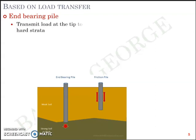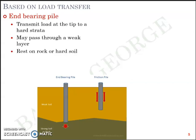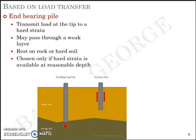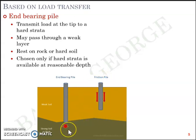End-bearing piles transmit the load at the tip to a hard strata. They may pass through a weak layer and are usually designed to rest on rock or hard soil. They are chosen only if hard strata is available at a reasonable depth — meaning you can't install a pile beyond a depth that's economical. For example, if rock is available at 60 meters and your structure is just two stories high, you don't have the luxury of installing a pile 50 meters deep. In such cases, you may resort to a friction pile. For end-bearing piles: QU = QP, where QU is the load acting on the pile and QP is the tip resistance.